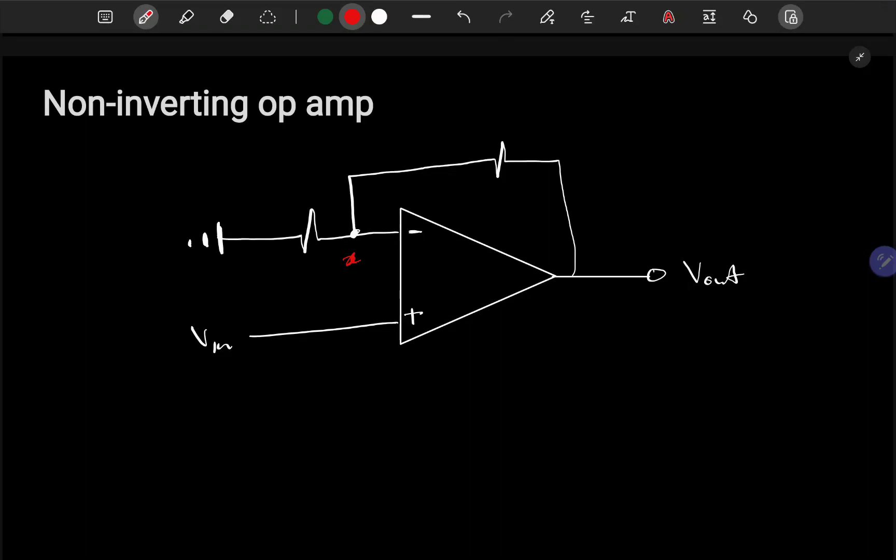In this video we're looking at non-inverting op amps. Non-inverting op amps are those where you put in a signal and it gets multiplied by some gain or scale.